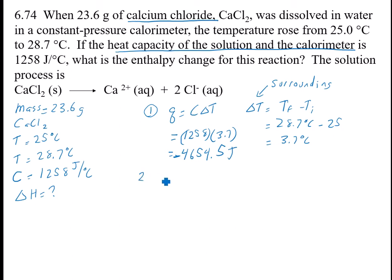Number two is to find the moles. N is mass divided by molar mass. The molar mass of calcium chloride is 40.08 from the periodic table plus two times 35.45, which gives me 110.98 grams per mole. So it is 23.6 grams divided by 110.98, and that is 0.2127 moles.